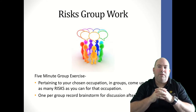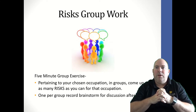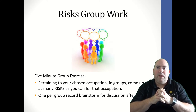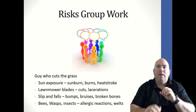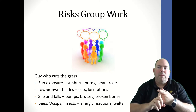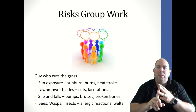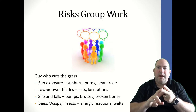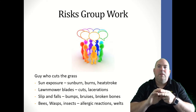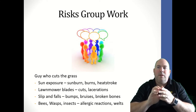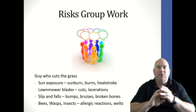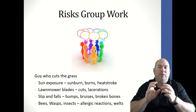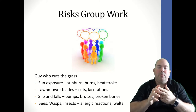Let's look back at our occupation and think of all the risks associated with each hazard. For sun exposure, possible risks are sunburn, burns, and heat stroke. For the lawnmower blades, you've got cuts and lacerations. For slip and falls, you have bumps, bruises, and broken bones. For stinging insects, there are welts and possible allergic reactions. Those are all hazards that cause those risks, each with different consequences and different possibilities.